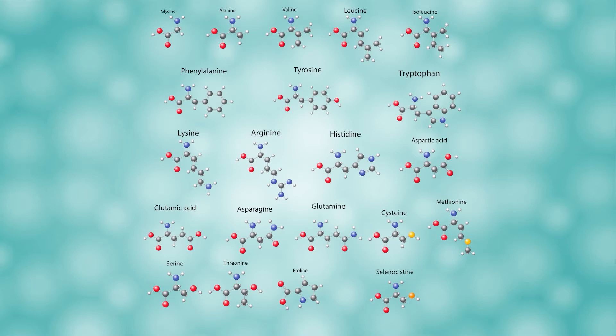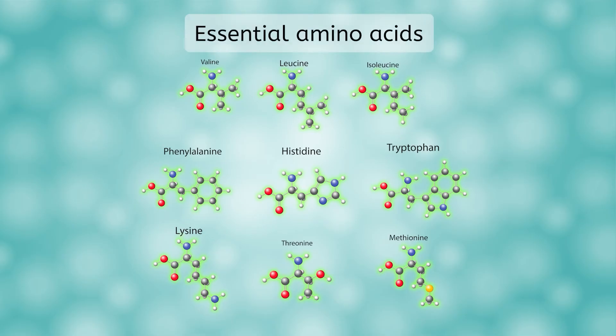Which amino acids are included in a protein, and in which order, determines everything about the protein, including the shape it will fold into and how it will interact with other molecules. Our bodies can produce some of the amino acids we need for protein construction. However, our bodies are unable to produce nine amino acids, and therefore they are called essential amino acids. We must consume them in our food so our bodies can use them to produce proteins.